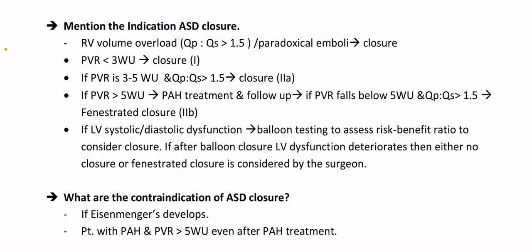If LV systolic or diastolic dysfunction is present, balloon testing is done to assess the risk-benefit ratio before considering closure. If LV dysfunction deteriorates after balloon occlusion, then either no closure or fenestrated closure is considered. Contraindications for ASD closure: Eisenmenger syndrome, or if Eisenmenger physiology develops; patients with PAH and PVR more than 5 Wood units even after pulmonary arterial hypertension treatment.